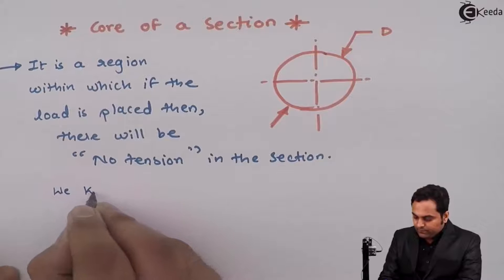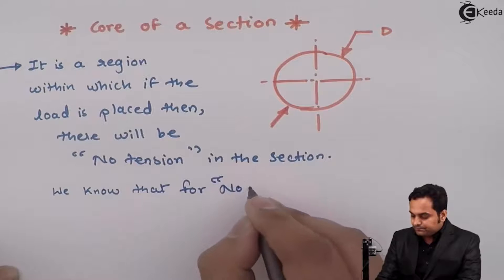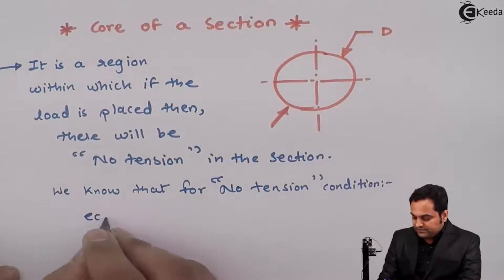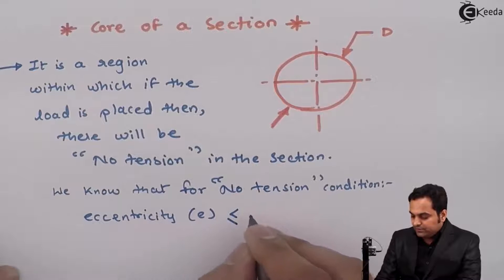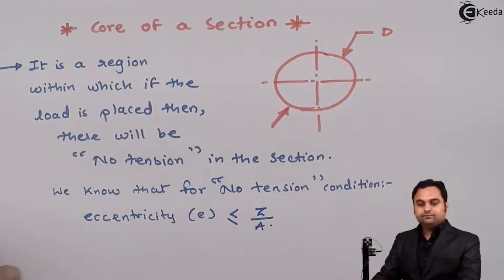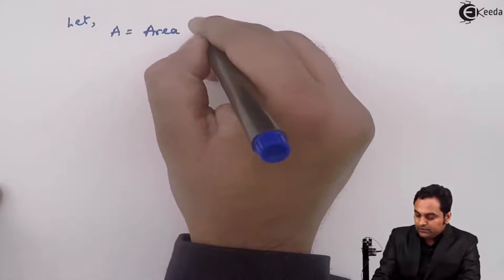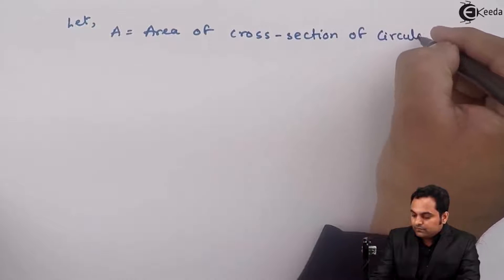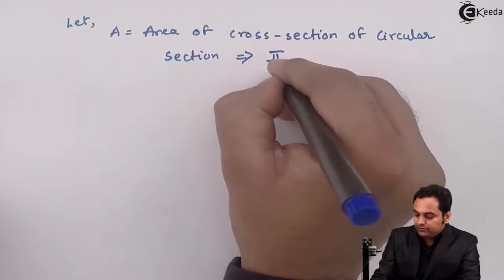We know that for no tension condition, eccentricity E should be less than or equal to Z upon A. For the circular section, let capital A equal the area of cross section, which is π/4 times D².